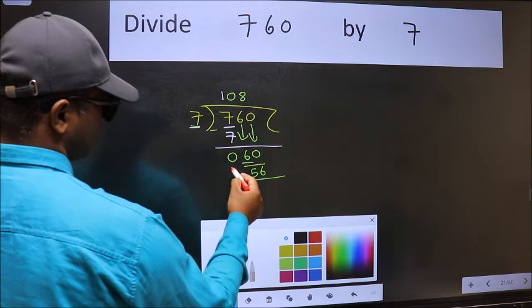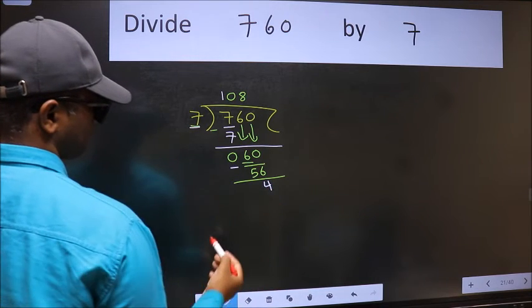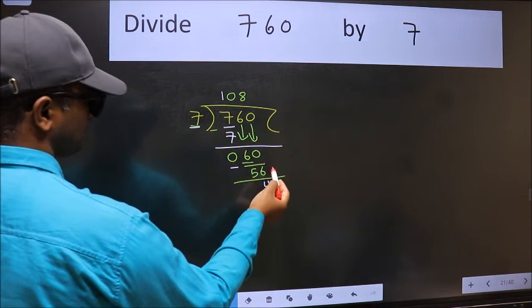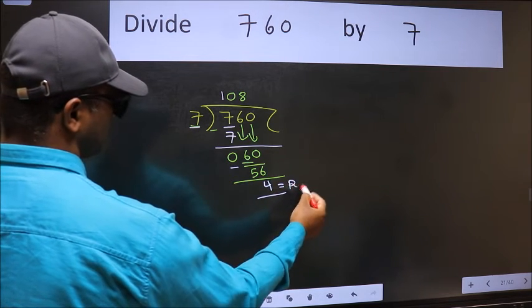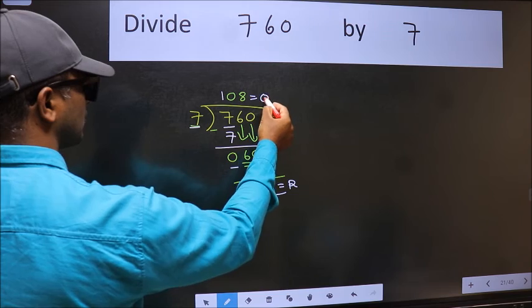Now we should subtract. We get 4. No more numbers to bring down. So we stop here. This is our remainder and this is our quotient.